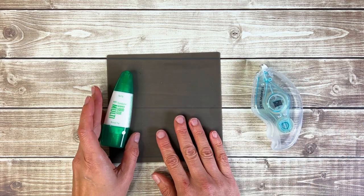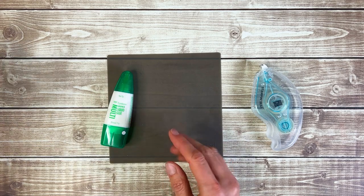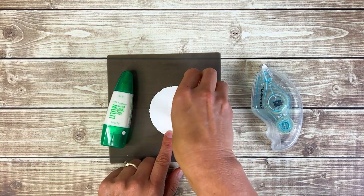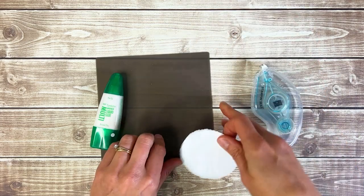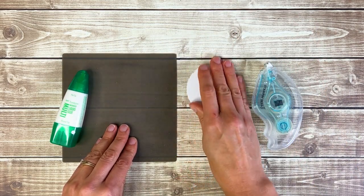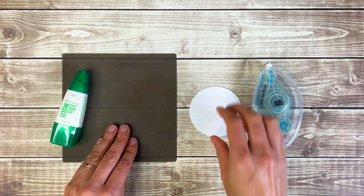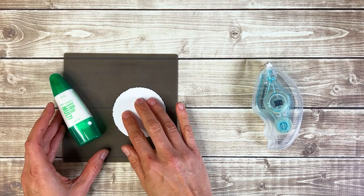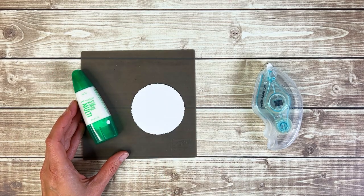Also sometimes when I'm stamping if I put my cardstock on the silicone mat it doesn't move around. If I put it on a flat surface sometimes it really moves around when I'm trying to stamp on it. So this will keep your cardstock or papers stuck in place a little better.